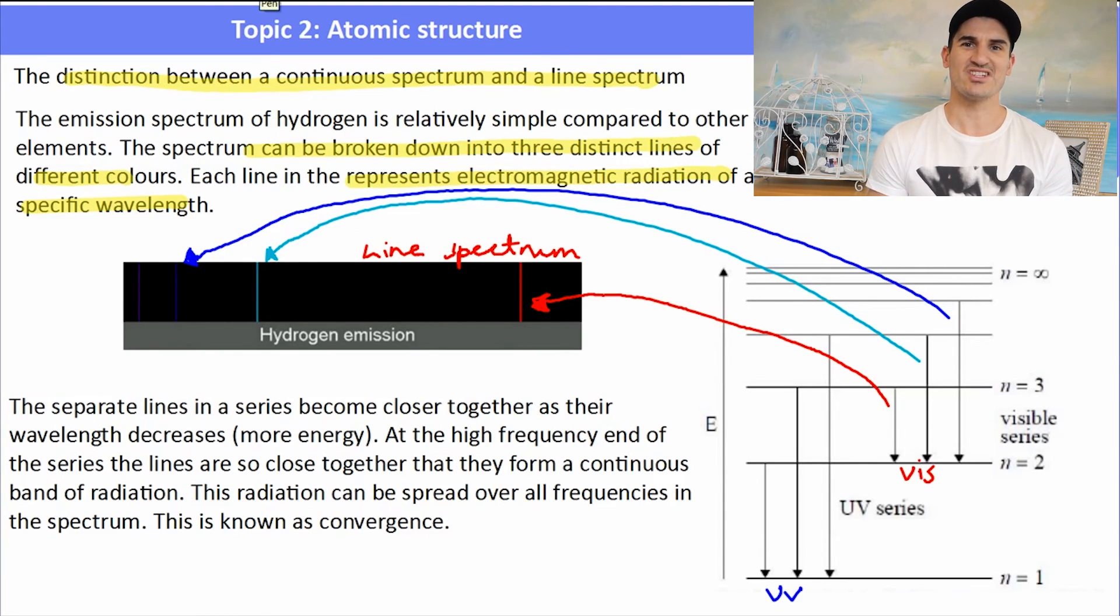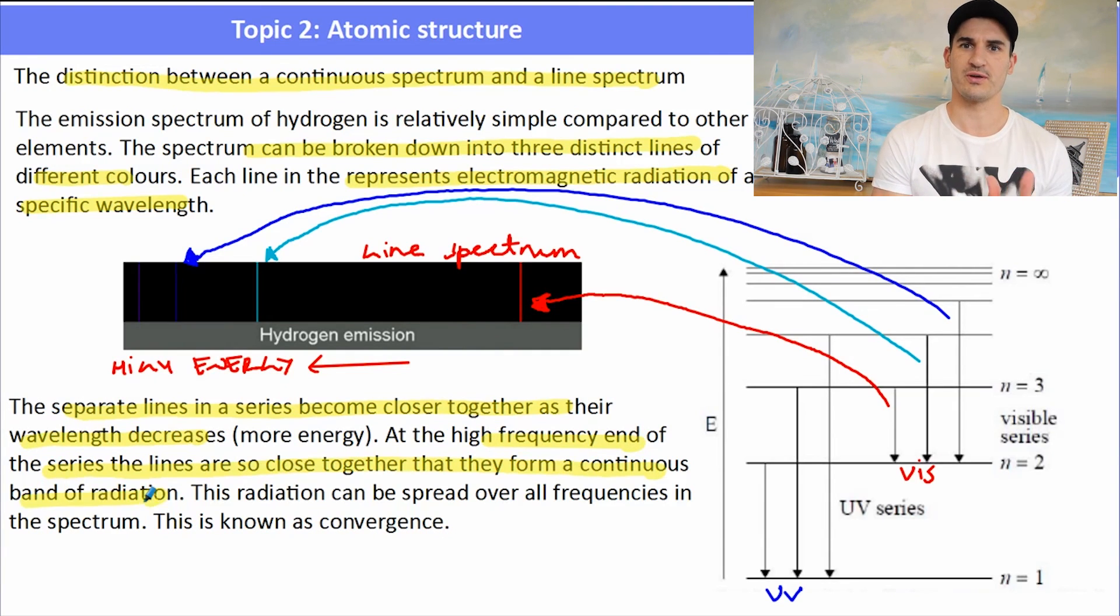The separate lines in a series become closer together as we get electrons that are jumping further and further away, because the energy between the shells starts to decrease, and this is where the energies start to overlap. A line spectrum is where you can clearly see the difference between the energy levels. A continuous spectrum is where those lines get so close together that you're unable to differentiate, and the radiation spreads across all frequencies of that particular part.